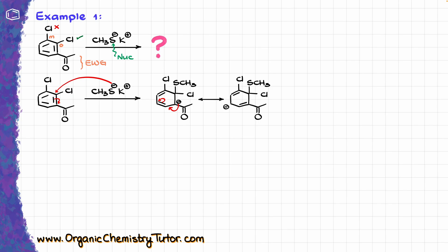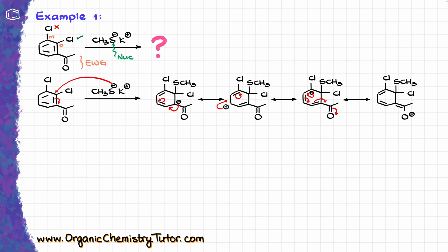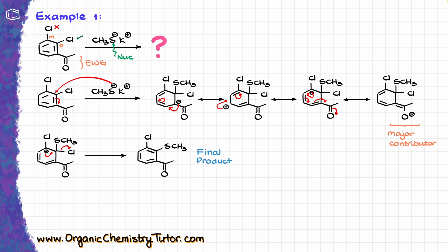Continuing the resonance structures, I move the electrons one more time, and then use the carbonyl for the last resonance contributor. The major resonance contributor has the negative charge on the oxygen, stabilizing it. Moving to the elimination step, the electrons come in and kick the chlorine out, giving the final product.